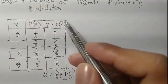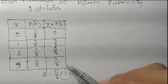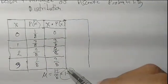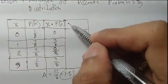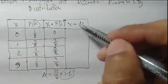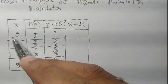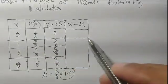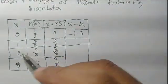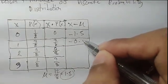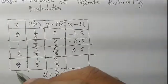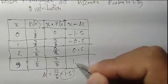Now we subtract the mean from each x value. So for x minus mean: 0 minus 1.5 is negative 1.5; 1 minus 1.5 is negative 0.5; 2 minus 1.5 is positive 0.5; and 3 minus 1.5 is positive 1.5.